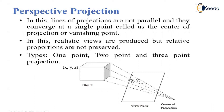We draw line segments to get the exact view of the particular image or object onto the view plane. The accurate view we will get, but the dimensions will be different.